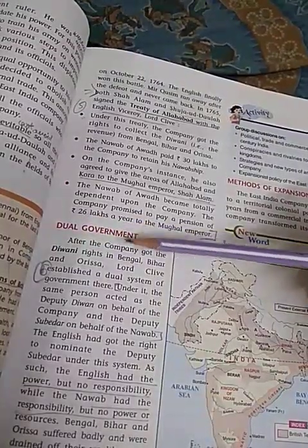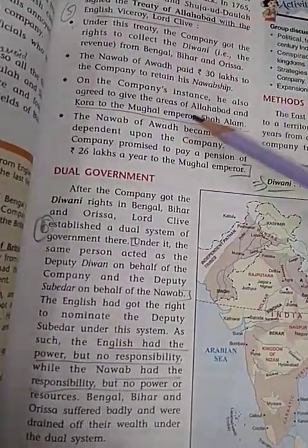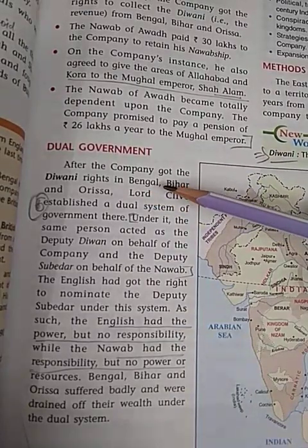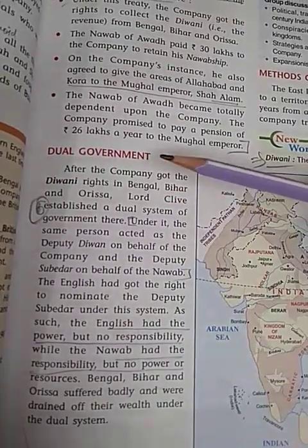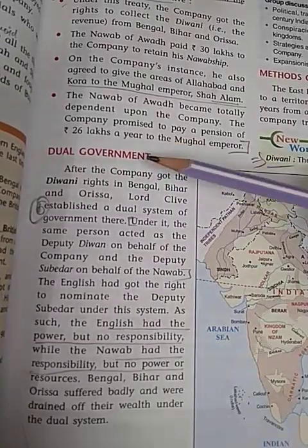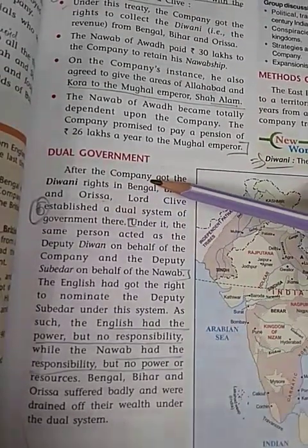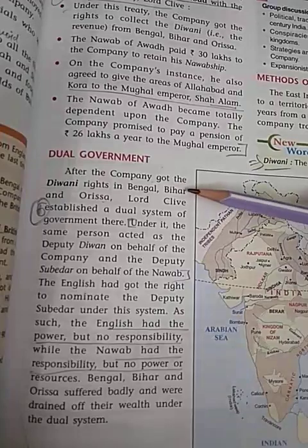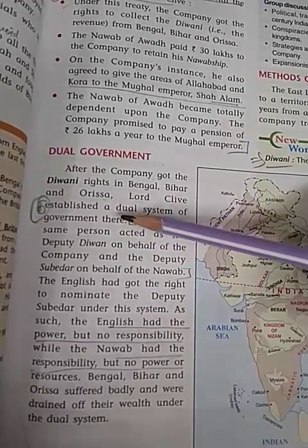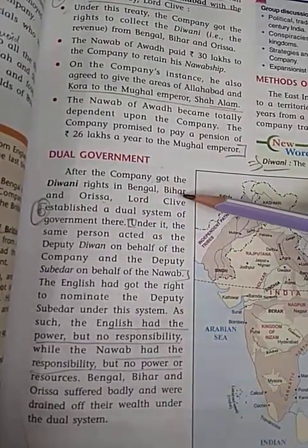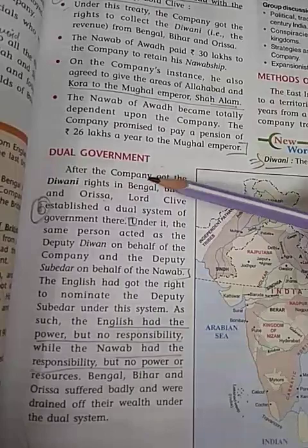Today we will discuss dual government and a few other topics. After the company got the Diwani right in Bengal — meaning the right to collect land revenue — Lord Clive established a dual system of government in Bengal, Bihar, and Orissa.